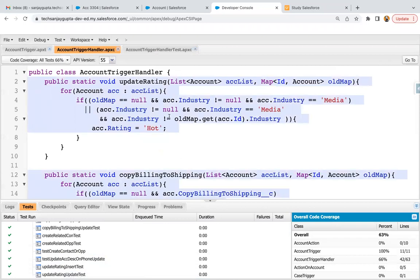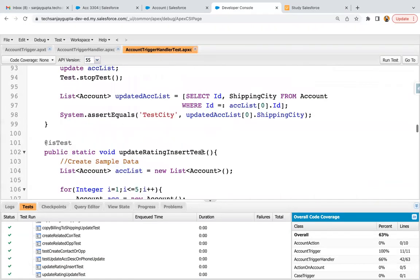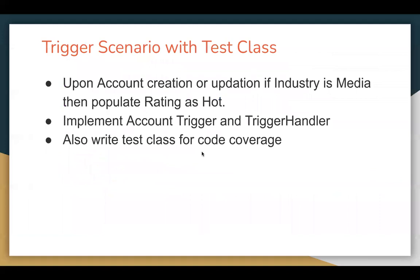Clicking on 'All Tests' and you can see the code is also covered. I hope you understood how we can implement this scenario with the help of a trigger. I modified the insert method so it is now capable of handling both account insert and account update operations. When a common requirement exists for both insert and update, you can write a single method for both, but in the test class you should have two separate methods to test insert and update operations independently.